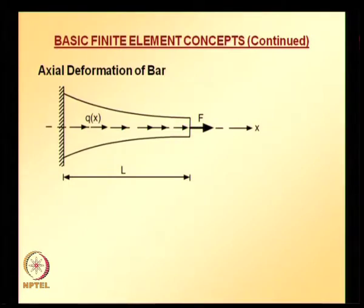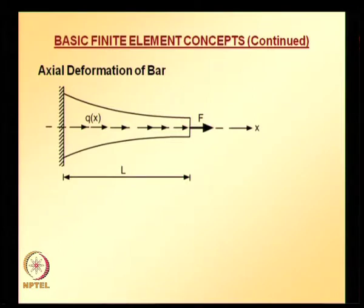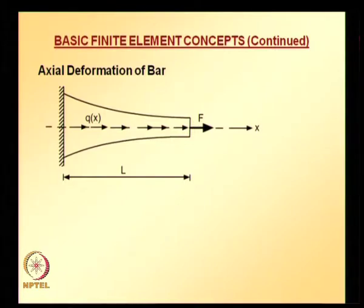A distributed load acts over the entire length of the bar and the material property is also assumed to be a function of x. This is all for the general case. If you have a specific case of a bar having uniform cross-sectional area and constant material properties, you can easily incorporate those into the equations we are going to derive. If you want to apply the finite element method, you need to express this physical phenomenon — axial deformation of a bar — in terms of a mathematical equation, which we solve using finite element method in conjunction with variational or Galerkin method.